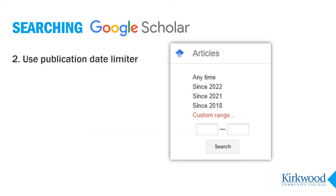Second, once you're searching Google Scholar, make use of the built-in publication date limiter on the results page to quickly get results within the date range you need.